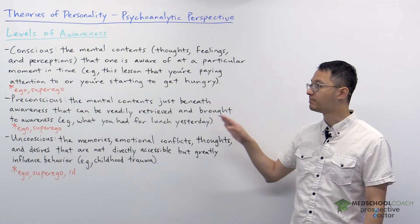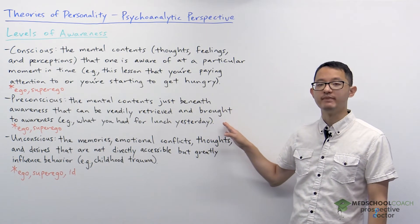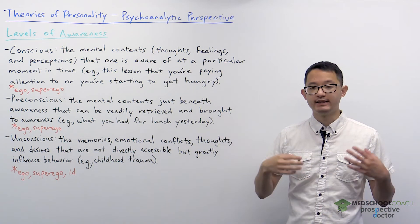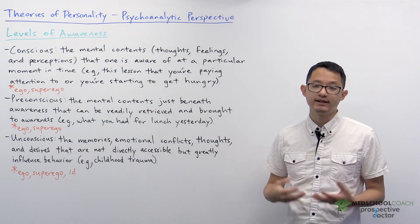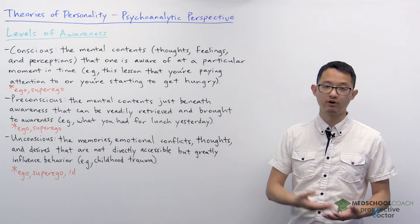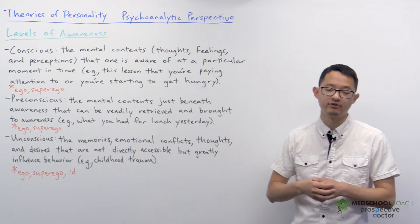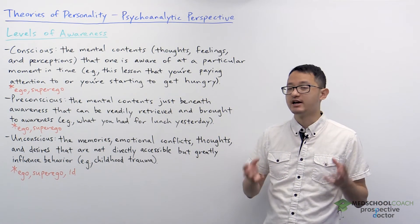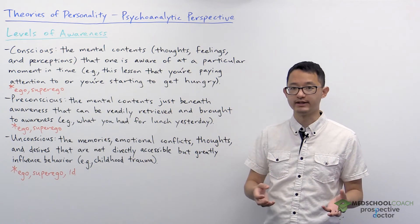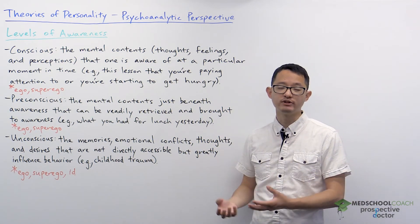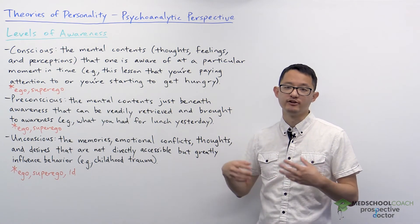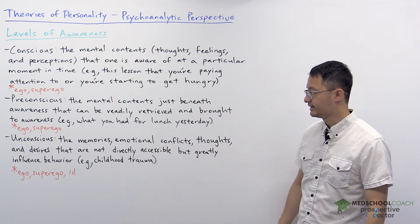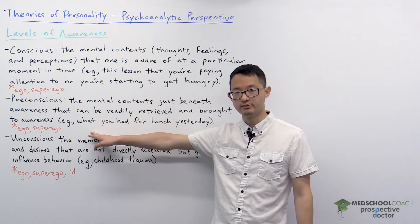Next, we have the preconscious. These are the mental contents just beneath awareness, but they can be readily retrieved and brought to our awareness. A very good example is what did you have for lunch yesterday? It's not something that's consciously in your awareness, but you can easily retrieve those memories and bring it to your awareness. And again, this is our ego and superego.